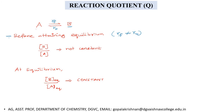Before attaining equilibrium, at any time, the concentration of B divided by the concentration of A in the reaction mixture — that is, product concentration by reactant concentration — this ratio is not a constant. This ratio depends on time. As time progresses, this ratio keeps changing, and this ratio is called the reaction quotient. Reaction quotient is nothing but the ratio of the concentration of the product to the concentration of the reactant in a reversible reaction before attaining equilibrium.